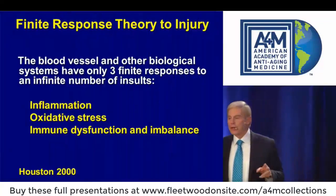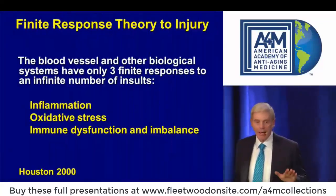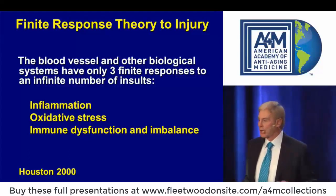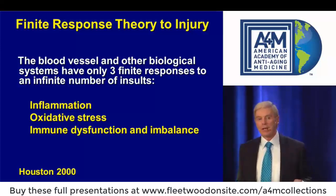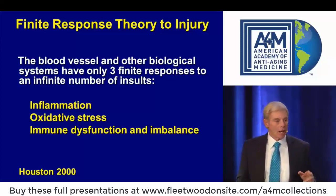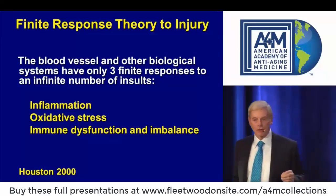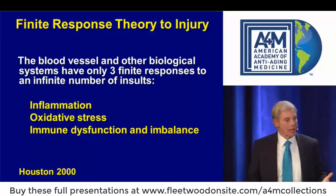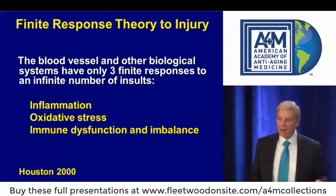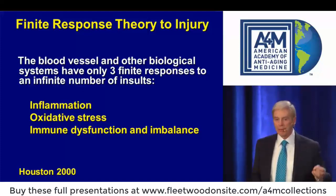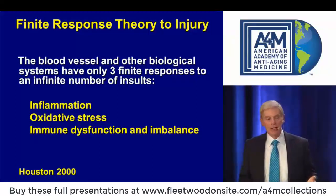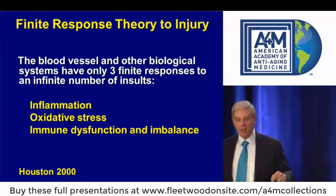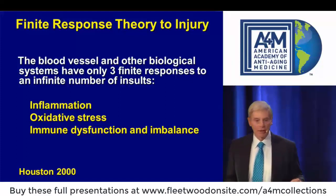These are the three things that are underlying every disease or process that occurs in the human body. If you understand inflammation, oxidative stress, and immune dysfunction, we're going to learn to backtrack and turn the system upside down - look at these finite responses, which are coming from infinite numbers of insults, resulting in a process that we name a disease, so we can get paid for it with an ICD-9 code.